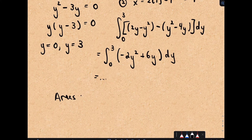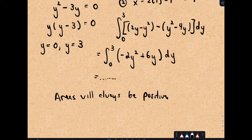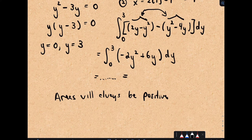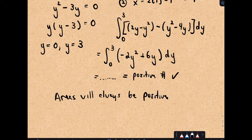One important remark: areas will always be positive. If you compute this definite integral and at the end get a negative number, that's clearly wrong. If you have the two functions backwards — the wrong one as the bigger one — you'll just get the wrong sign. So a negative result is a clear indication that you've done something incorrect.